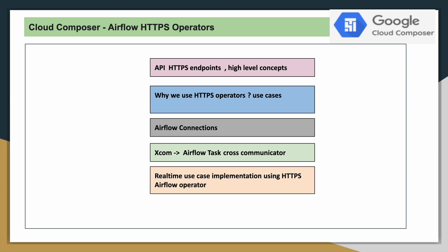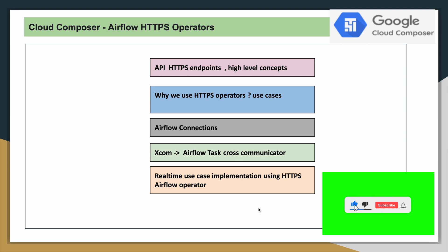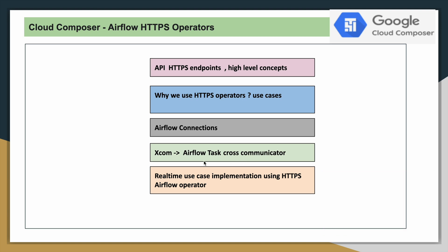Finally, the actual use case implementation: first I will show a demo where we connect to an HTTPS endpoint using Airflow's SimpleHttpOperator, extract data using the GET method, and examine the data written to the XCOM variable — that's the first demo with only one task. In the second demo, once we have the data in XCOM, we will pull it out, format it, and write it into a Google Cloud Storage bucket.